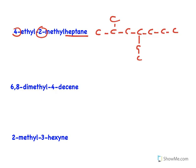After placing the substituents, fill in the remaining bonds with hydrogens. Every carbon must make four bonds. The terminal carbon has one bond to the chain, so it takes three hydrogens. The next carbon bonds to two other carbons, so it gets two hydrogens. Continue filling in hydrogens for each carbon accordingly.